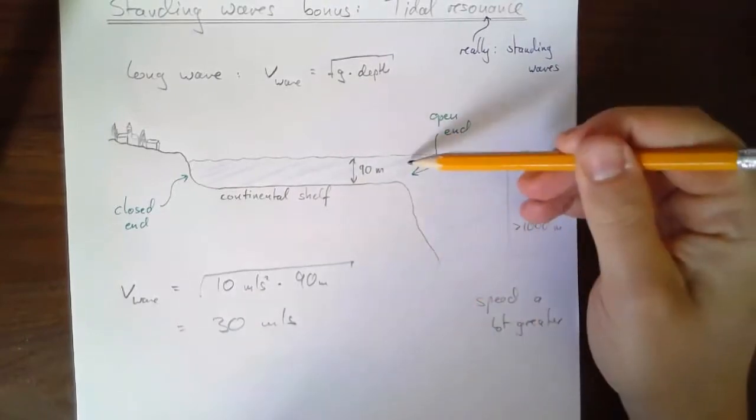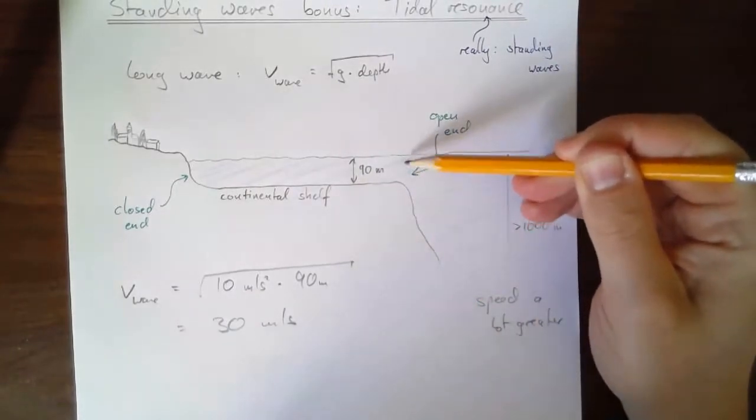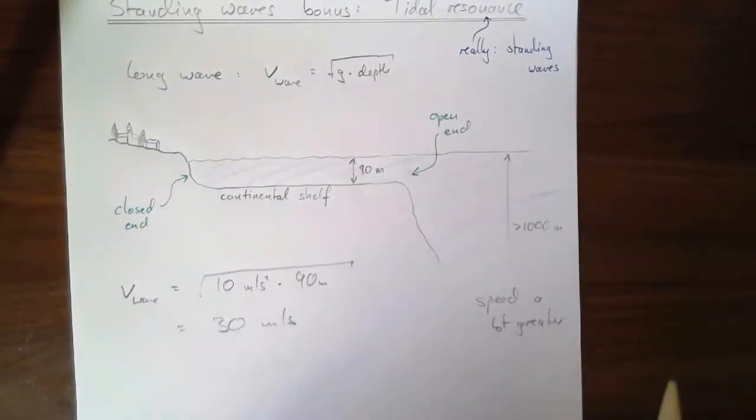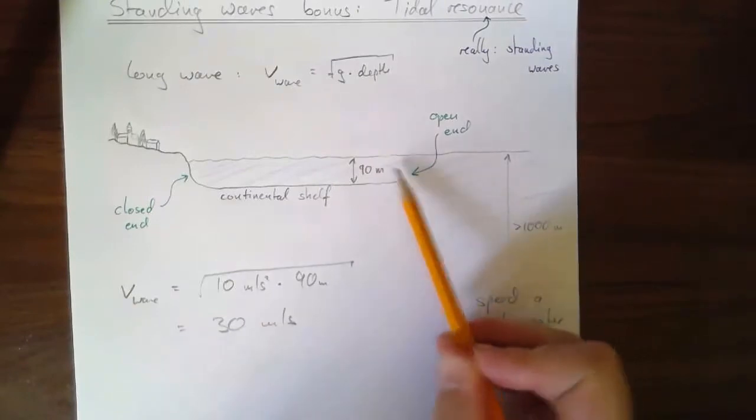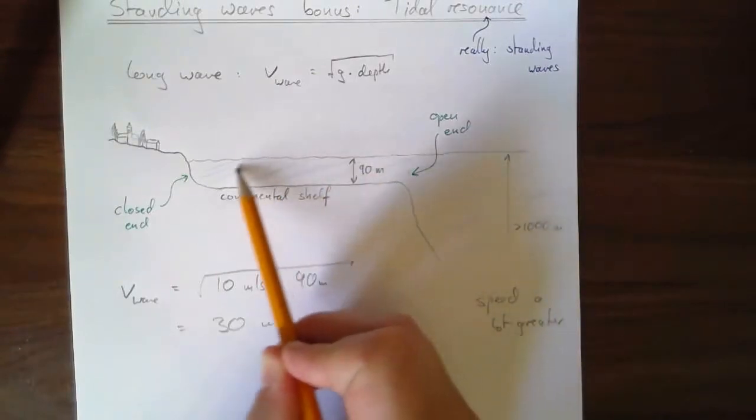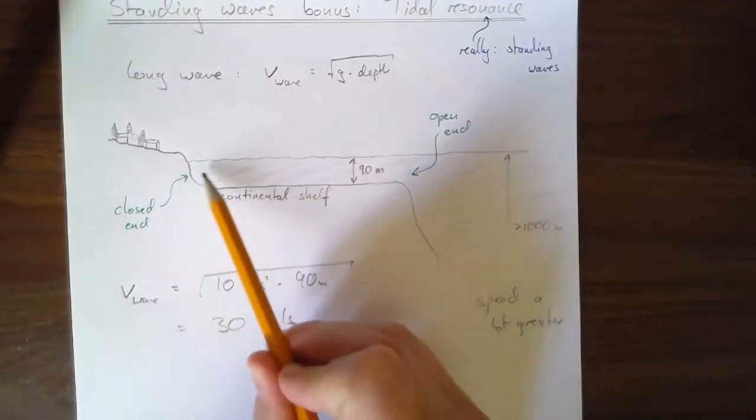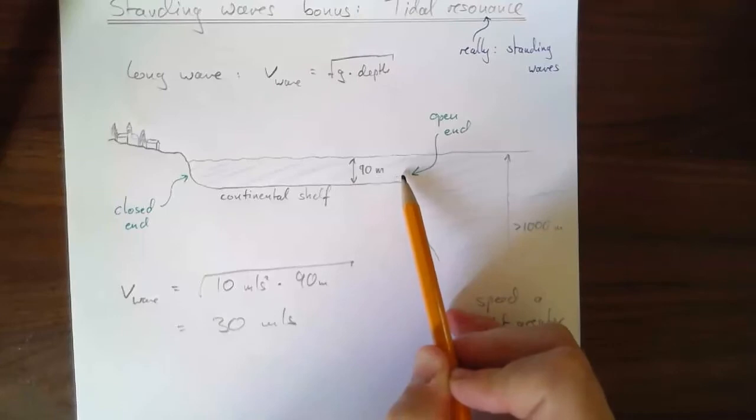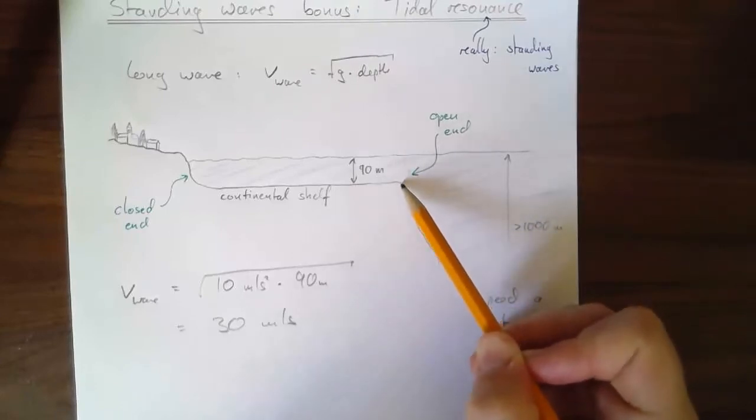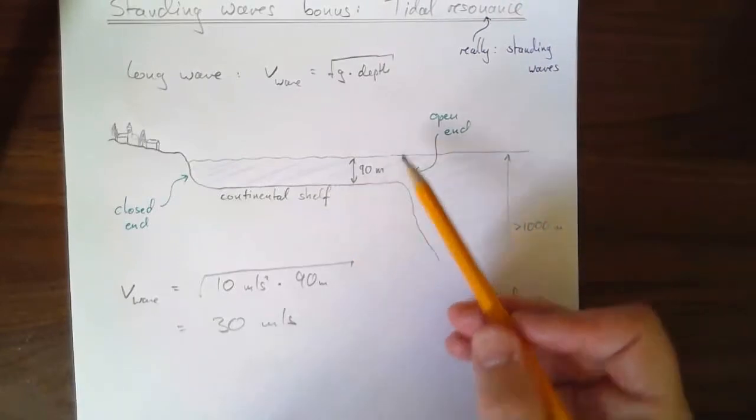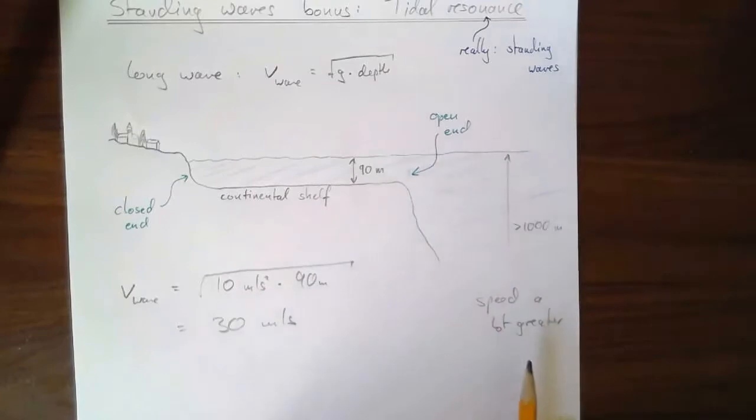That means roughly here, where the continental shelf drops off, there's a boundary where the wave speed changes. Now, whenever the wave speed changes, that means we get a reflection. If a wave travels along here, it doesn't matter how long it is, whether it's visible or not, if it reaches that point, it's going to reflect. Of course, a lot of other factors involved make this more complicated.